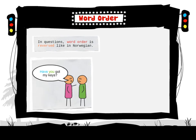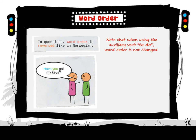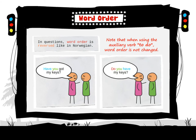'Have you got my keys?' Note that when using the auxiliary verb 'to do', word order is not changed: 'Do you have my keys?'